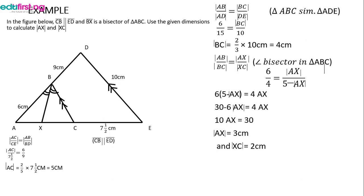Starting with triangle ADC, we write AC/CE = AB/BD. We don't know AC, but CE is 7.5, AB is 6, and BD is 9. Cross-multiplying and solving for AC gives 5 cm. Similarly, using AB/AD = BC/DE, with AB = 6, AD = 15, and DE = 10, we solve for BC and get 4 cm.